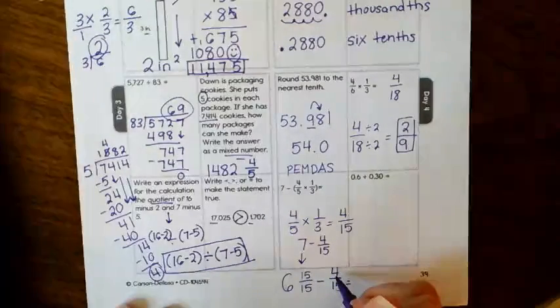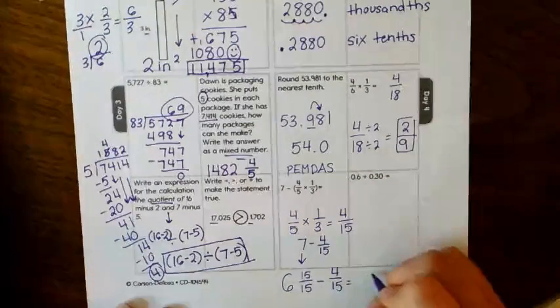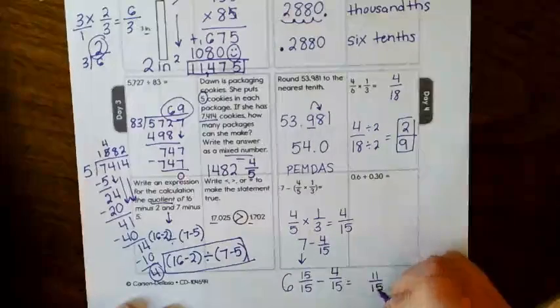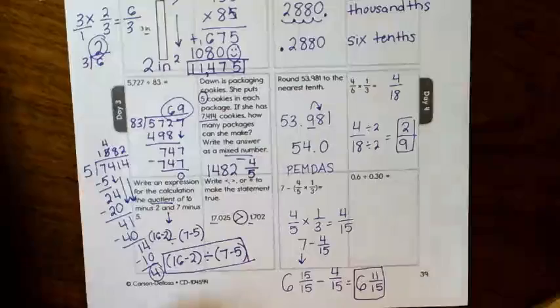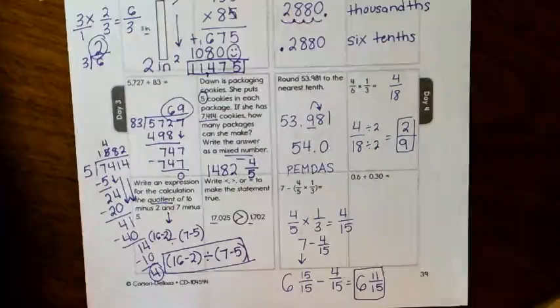So 15 minus 4 is 11 over 15 and then just bring your whole number over. So 6 and 11 fifteenths.